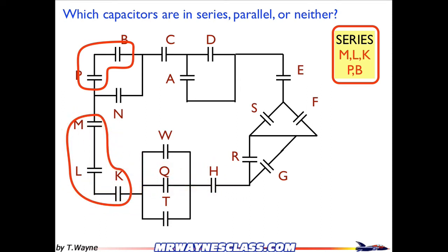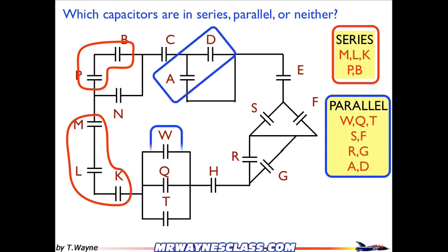Parallel. Let's look at parallel. There are a couple in parallel. So if I look at these, in parallel, I've got the A and the D, the WQT, I've got the S and the F, and I have R and G.